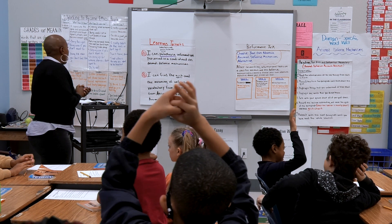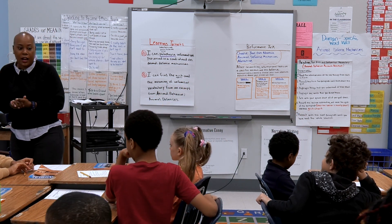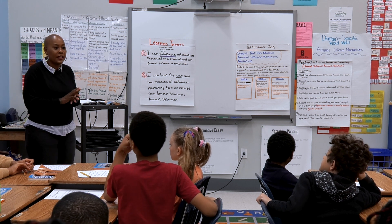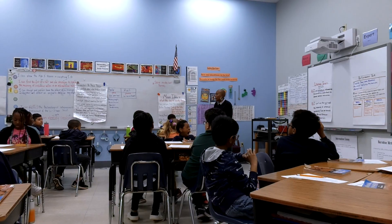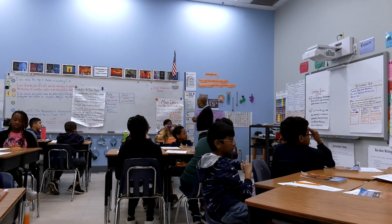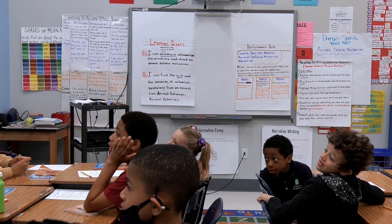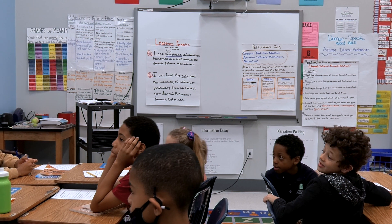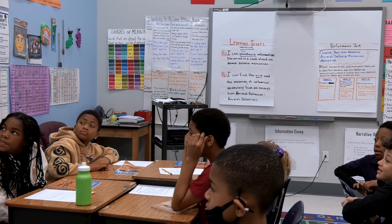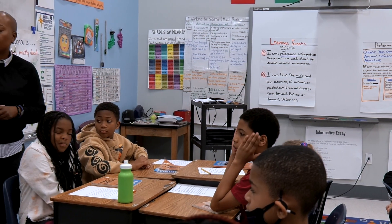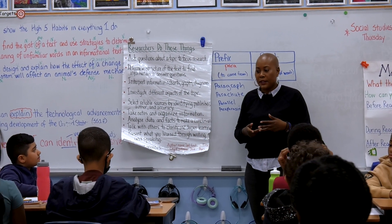Y'all already started off with such a great way of thinking about some of the things that researchers do to help them find information. Look at this long list — it's just not one or two things that researchers do; they do all of these things to help us. This will be in our classroom to help us as we're trying to learn more about our animals and their defense mechanisms. We're going to be able to definitely use this chart.